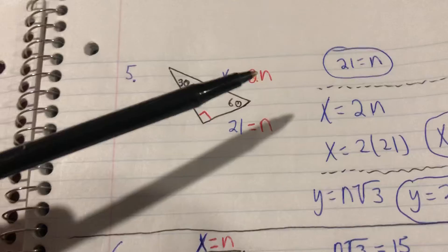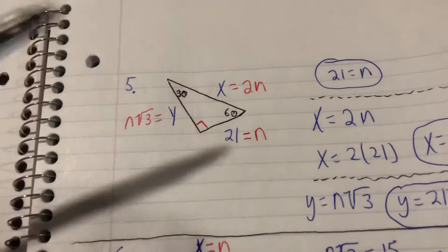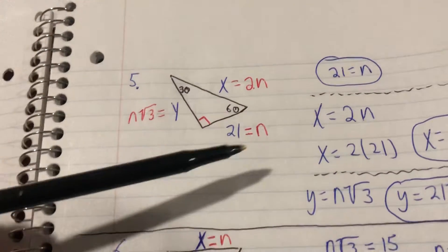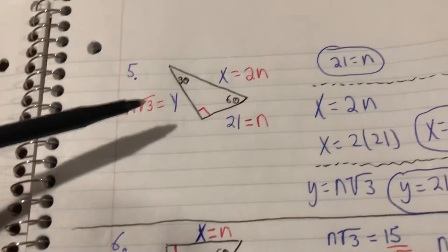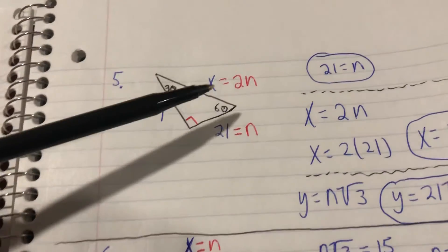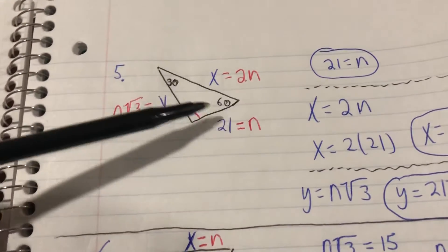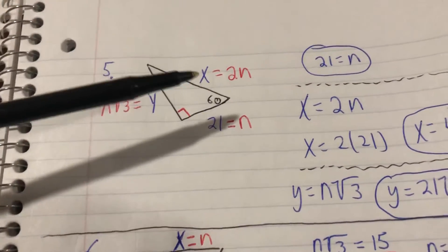Now you might see different letters, a different variable other than n used. If you see this online, a lot of people use x, 2x, and x√3. The reason I don't use x is because a lot of times we're solving for a side named x or labeled x, so I don't want to add extra confusion by having two different x's involved in the same problem. That could just get messy.